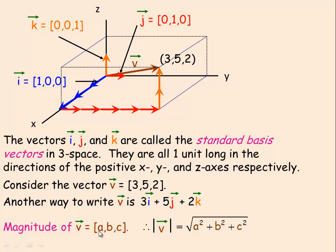Now if you have any vector in 3-dimensional space, back to component form: (3, 5, 2) is component form. We'll call it the vector (a, b, c). The magnitude of that vector — very similar to 2-space — is just the square root of a² + b² + c². In fact, it's still Pythagoras's theorem, called Pythagoras's theorem in 3 dimensions. In 2-space it would only have components a and b, so it would be the root of a² + b². In the third dimension we have a third component, that's why there's a c² here.